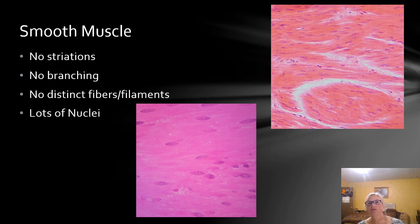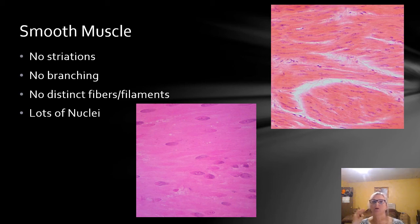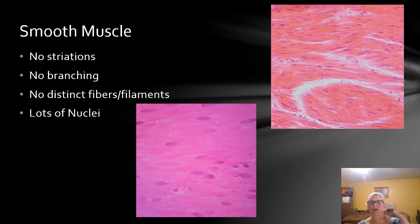Smooth muscle is not technically striated — even though the top right picture has somewhat of a stripy look, it is not an alternating dark-light, dark-light pattern. It does not branch. There are no distinct fibers and filaments, and you have lots of nuclei.